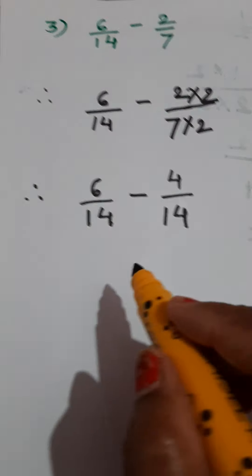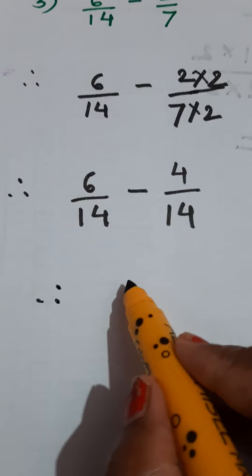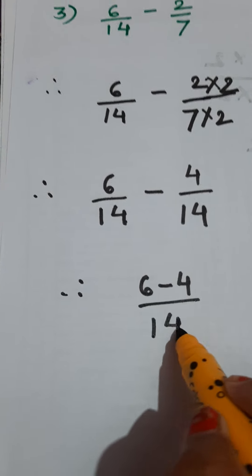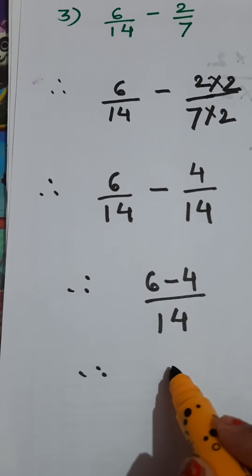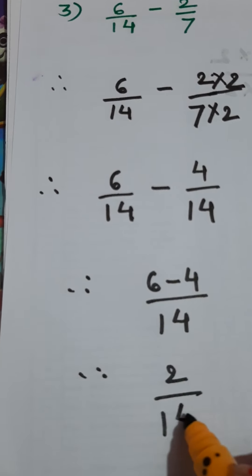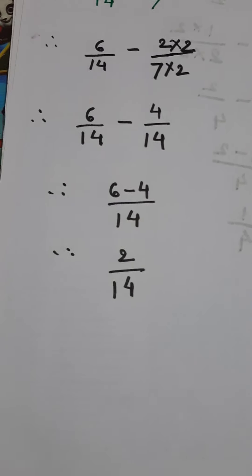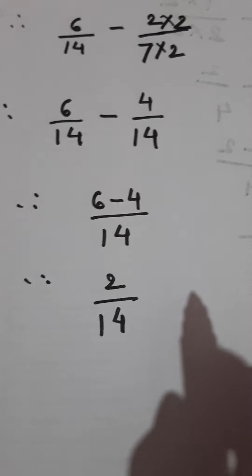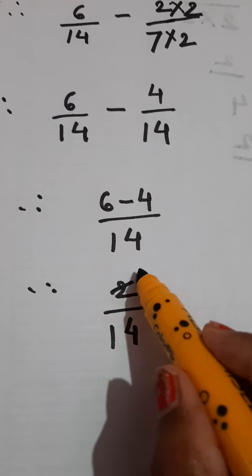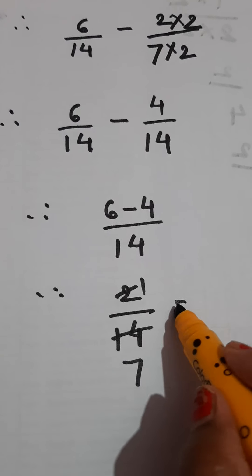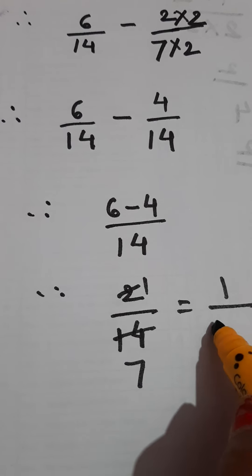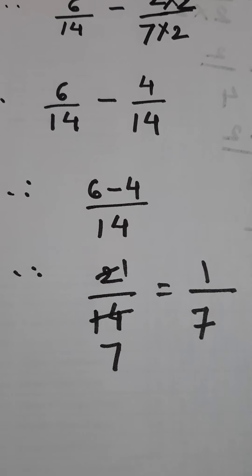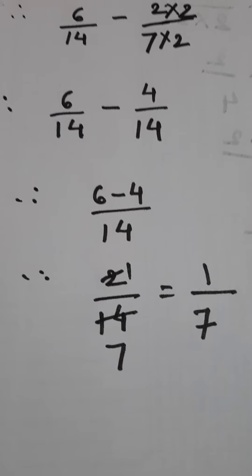So it is easy to subtract. Give them the common denominator: 6 minus 4 upon 14. Therefore, 6 minus 4 is 2, so 2 upon 14. If you observe the fraction, 2 and 14 are from the same table, so you can reduce the fraction. 2 ones are 2, 2 sevens are 14. When the numbers are from the same table, we can do reduction of the fraction. Got it?